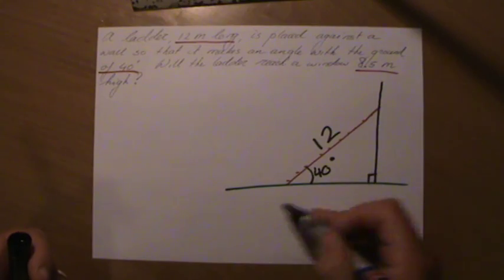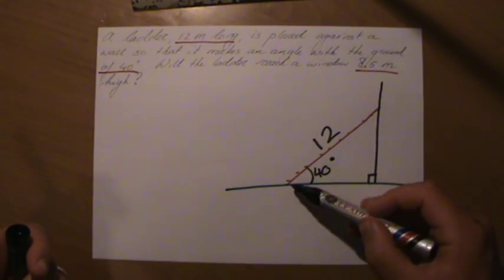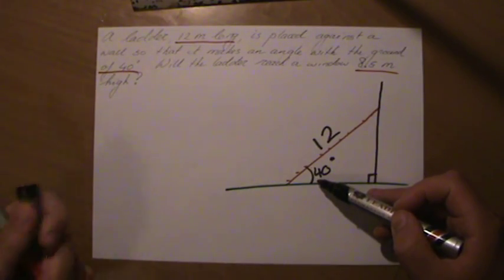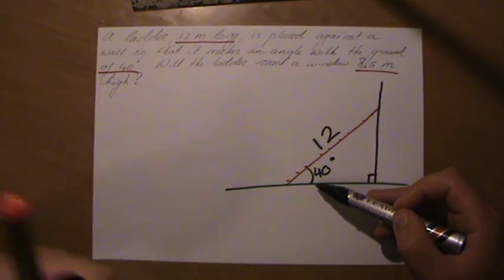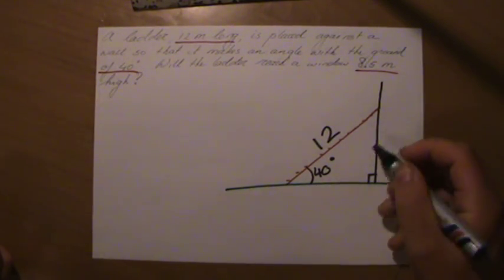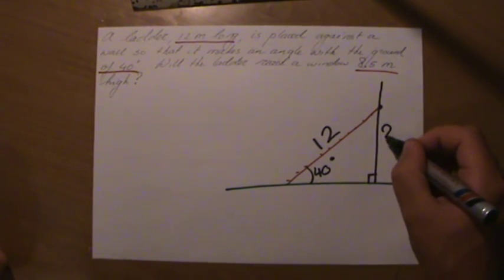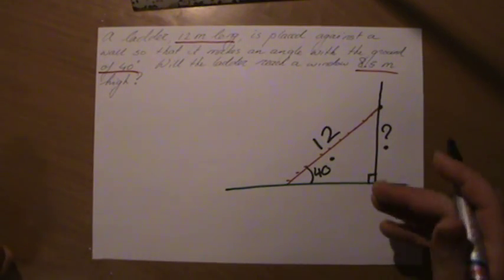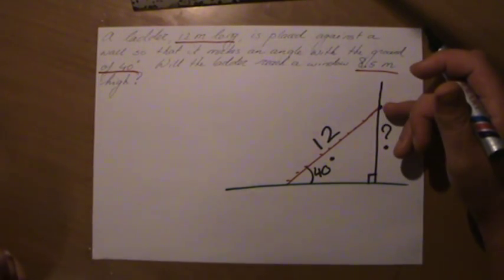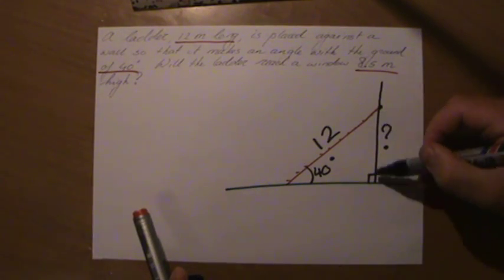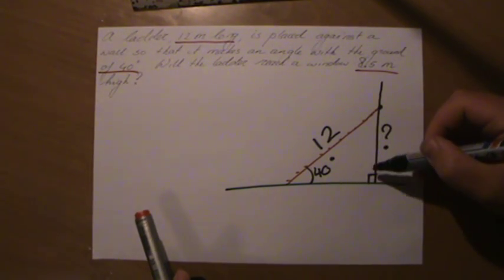Okay, it starts to make sense now to me. I see this right angle triangle. We have the hypotenuse which is 12, we have an angle there 40 degrees. Will the ladder reach a window which is 8.5 meters high? So this basically is our question mark, the wall, the height of the wall. Let's find out how high it is, and then we can answer with yes or no. Basically, is this more than 8.5 meters or less?